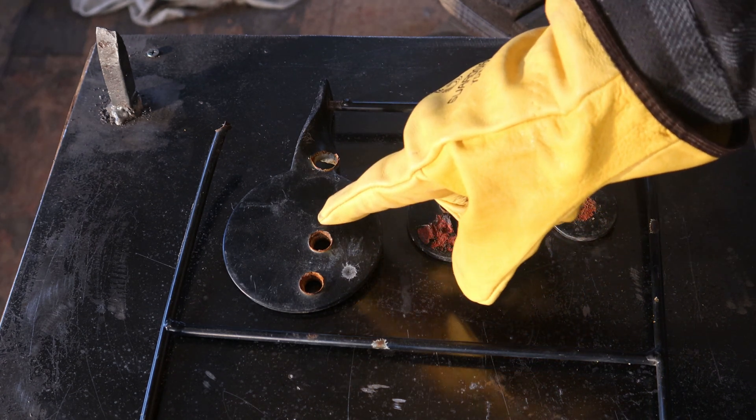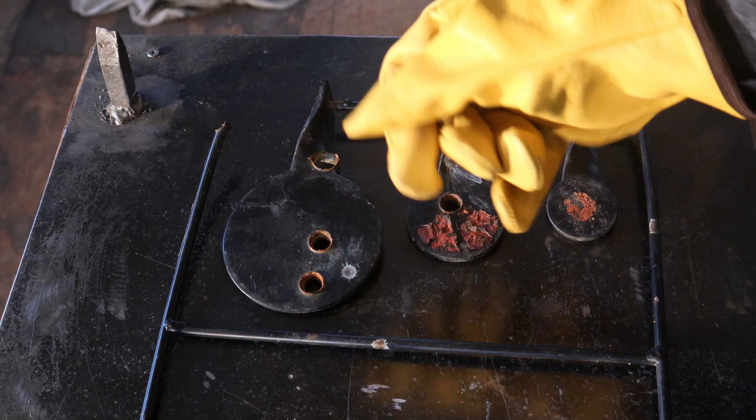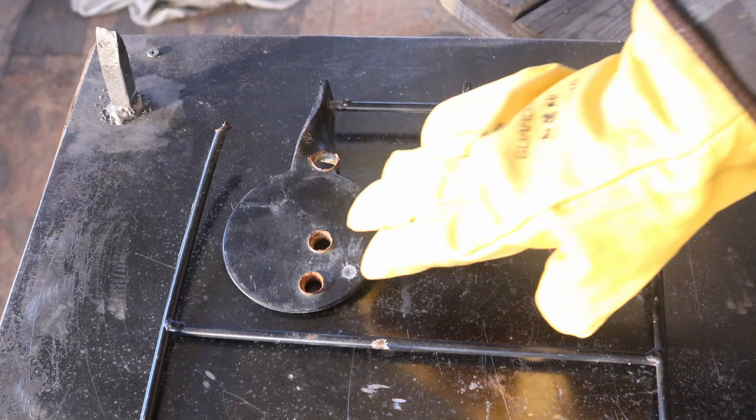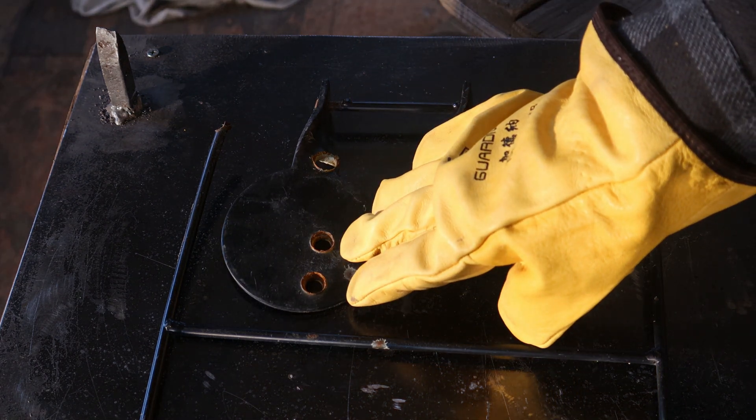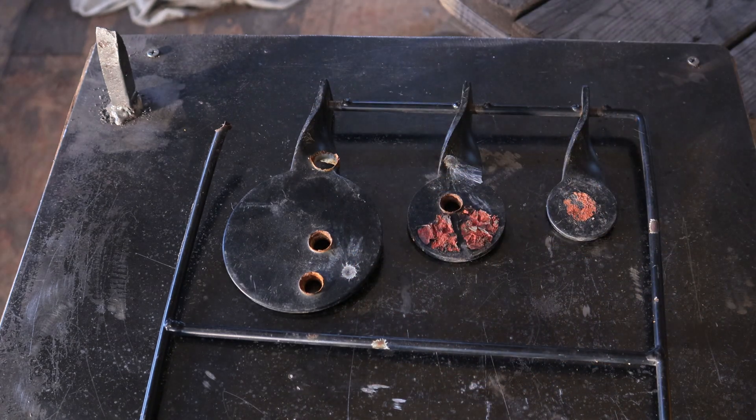First thing I'll do is take a grinder and grind off the burrs that are on both sides of this hole. Second, I'll take a file and file out the insides to remove all the rust in there. Then I'm going to start by welding one side of all the holes, then welding out the back side, and then grinding off any extra material.